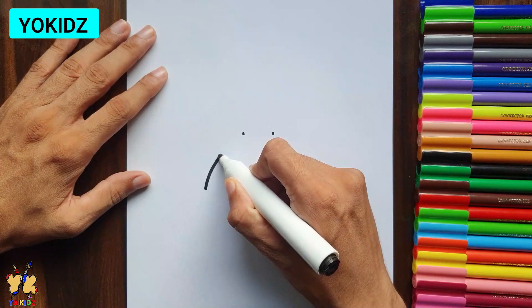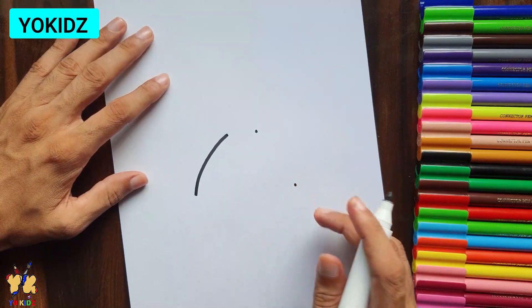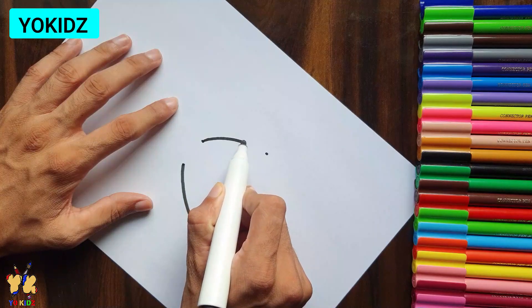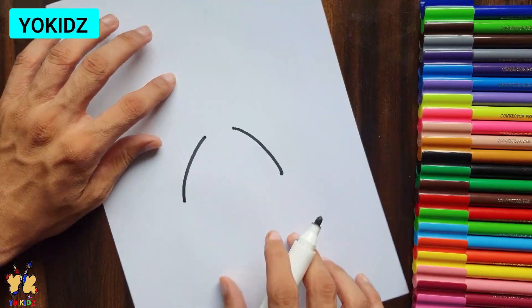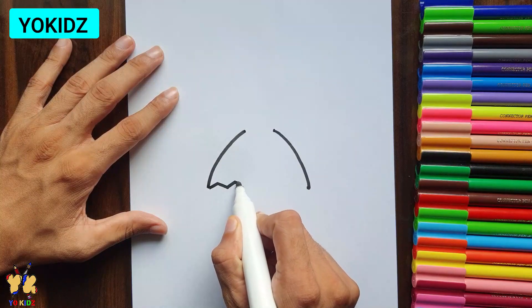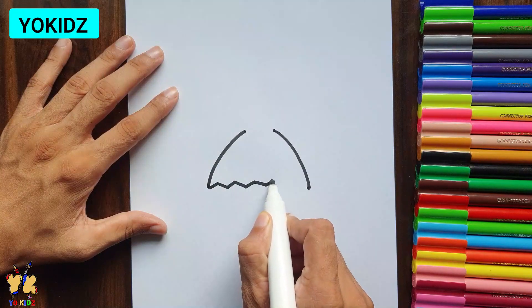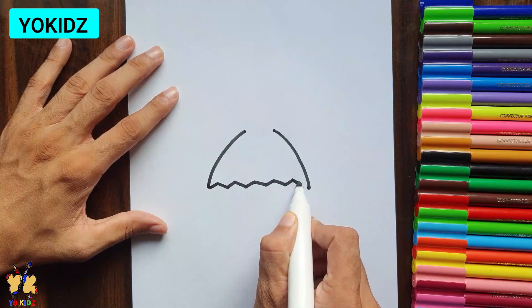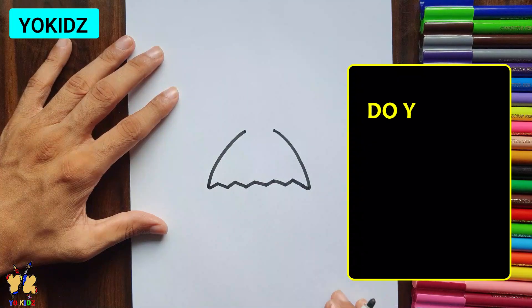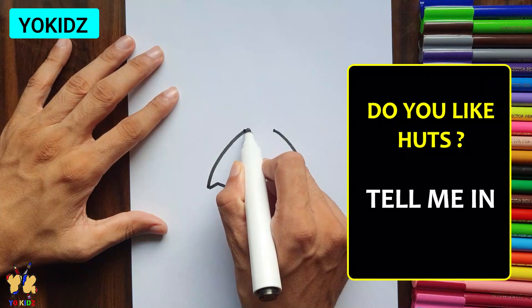So first of all we'll connect these two dots like this, and same goes with the other side. Then we'll connect the two bottom dots by making a zigzag line like this, and then connect the upper dots by a straight line.